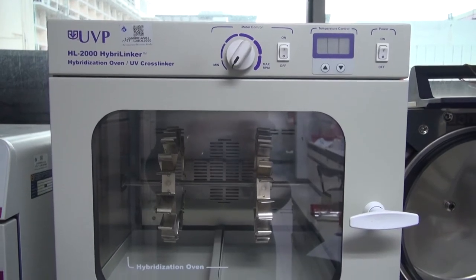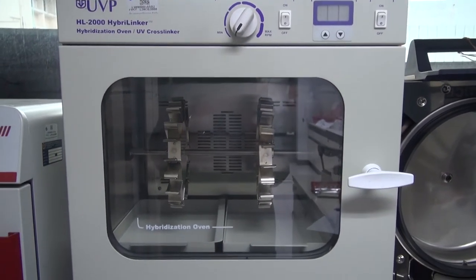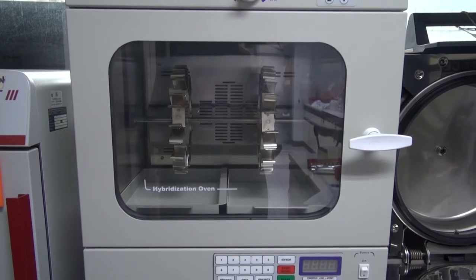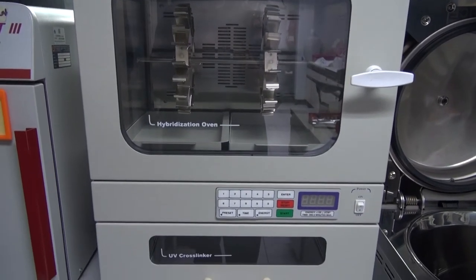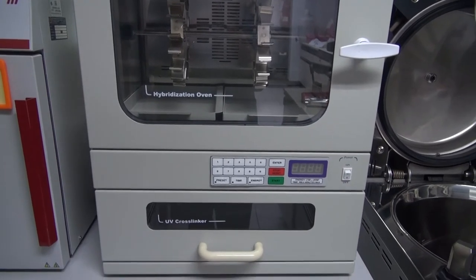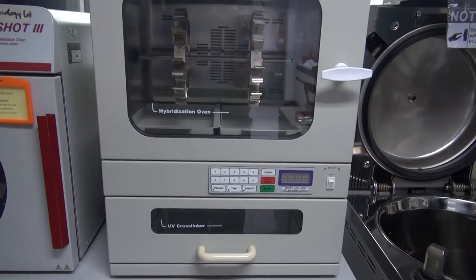Hi everyone, today I would like to demonstrate to you how to use the UVP hybrid linker. This system provides a combination of hybridization oven and a 254 nanometer UV cross-linker.